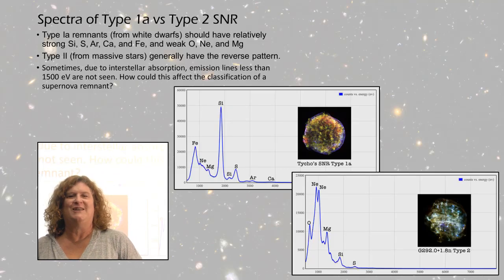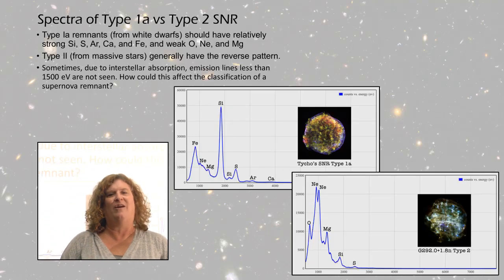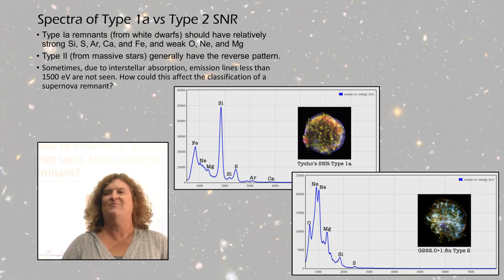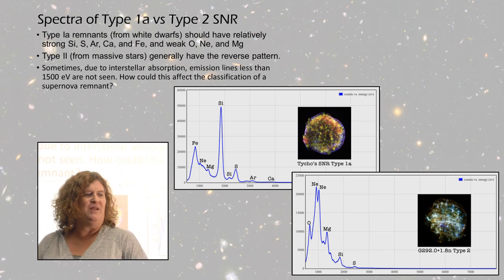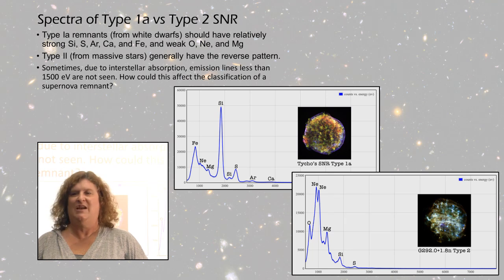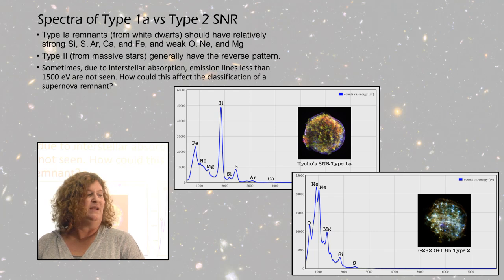We have picked two representative supernova remnants. For the Type 1a, we've picked Tycho's supernova remnant. And for the Type 2, we have picked G292.0 plus 1.8.